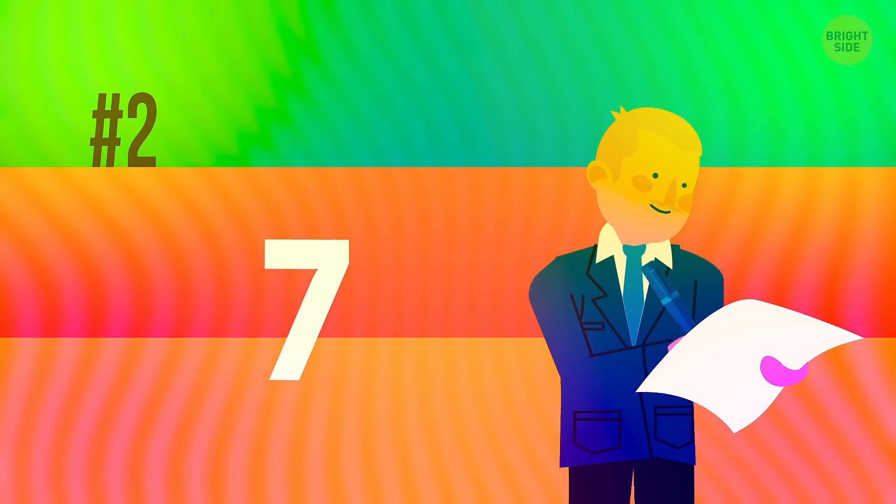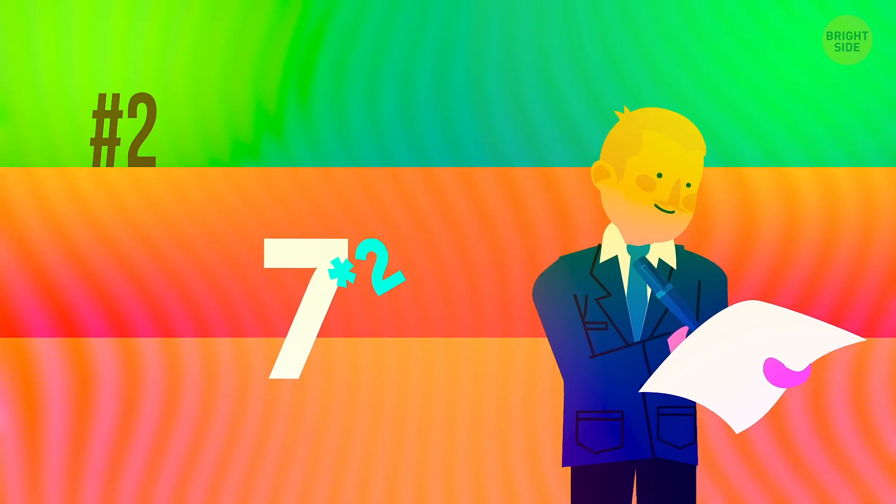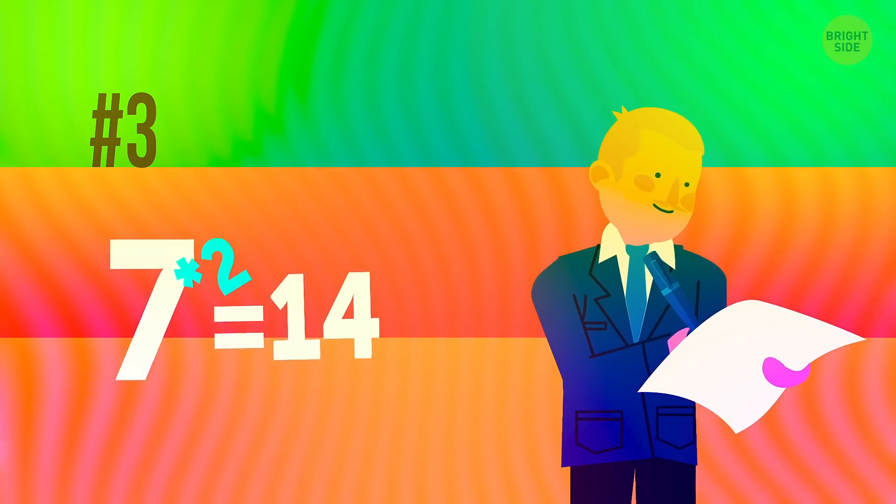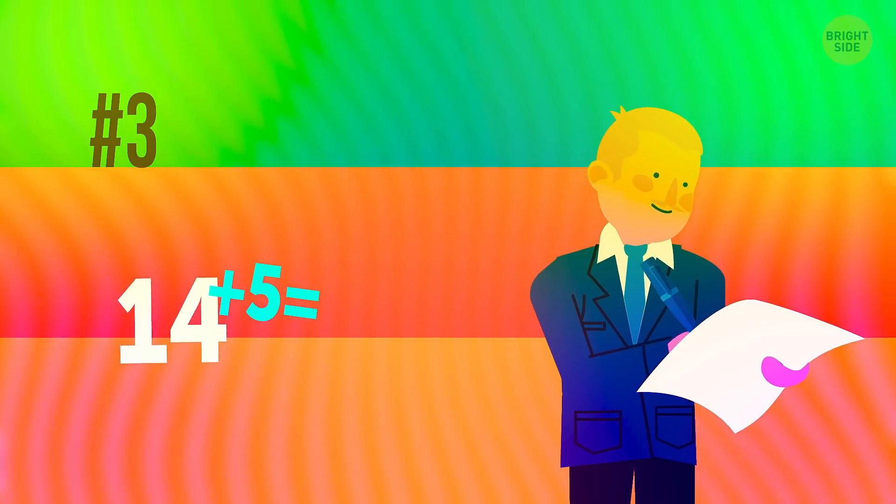Now, I'll multiply 7 by 2. 7 times 2 is 14. Let me add 5 to my result. 14 plus 5 equals 19.